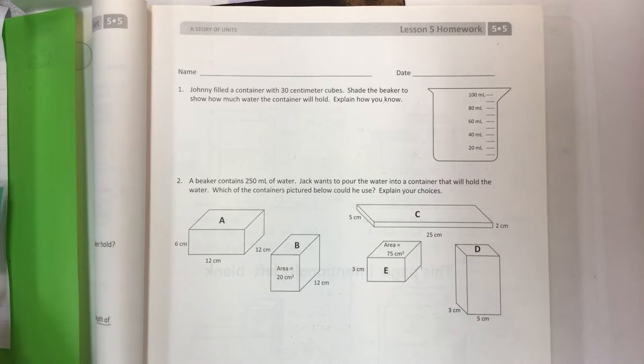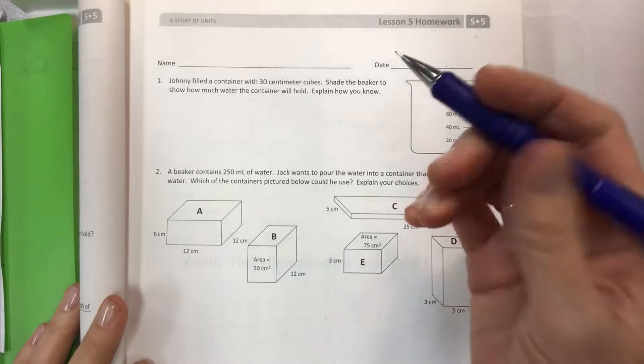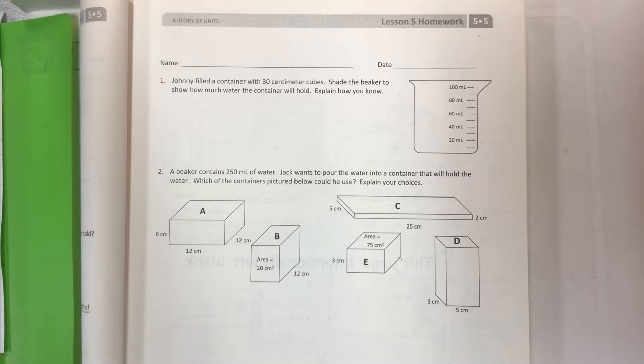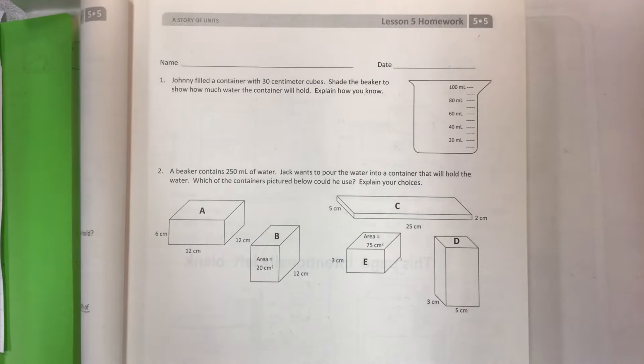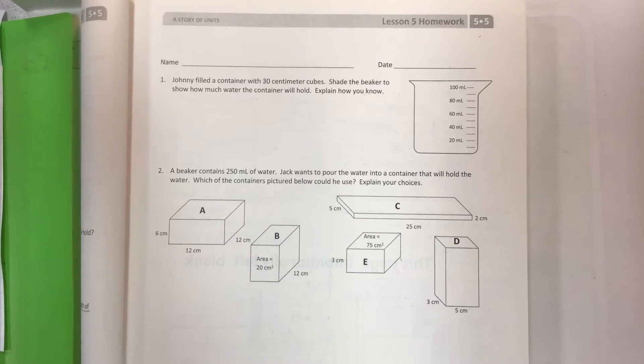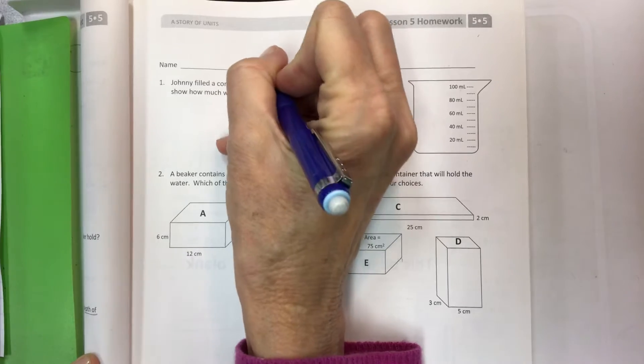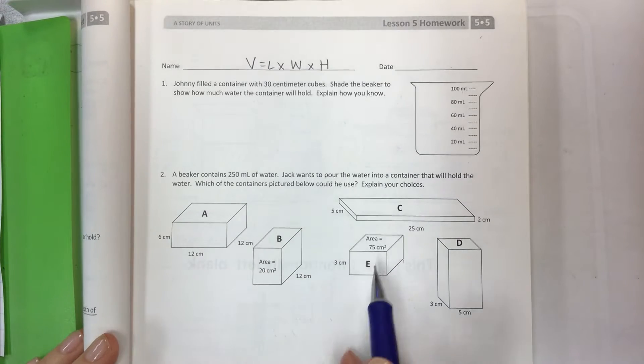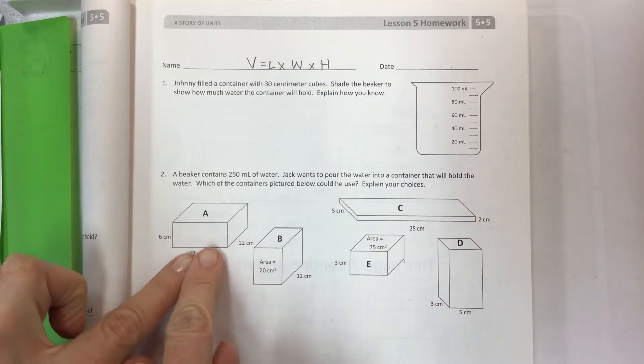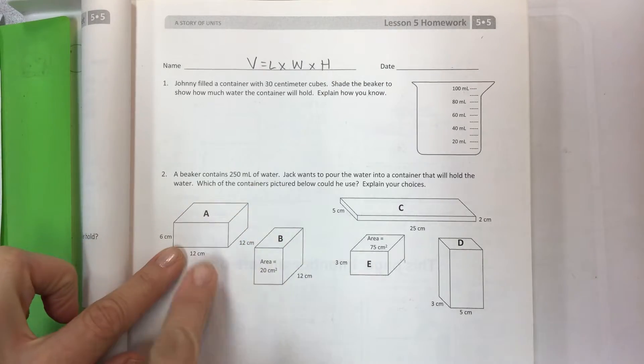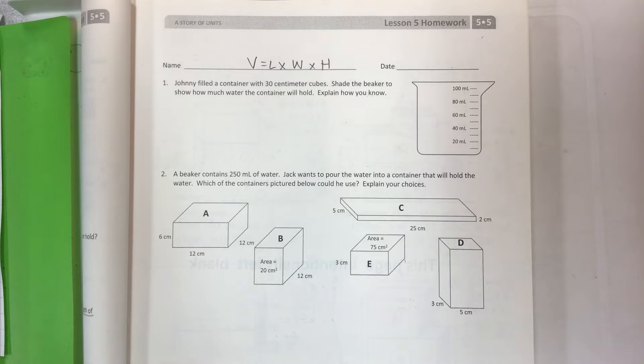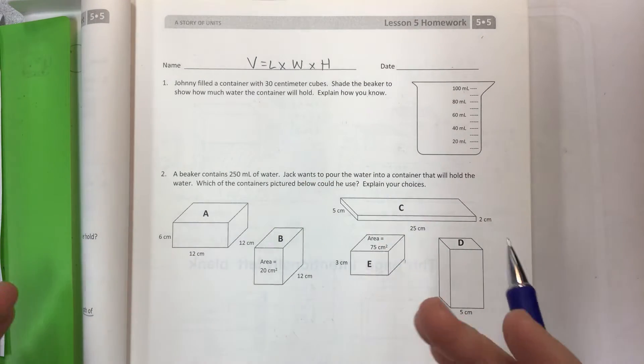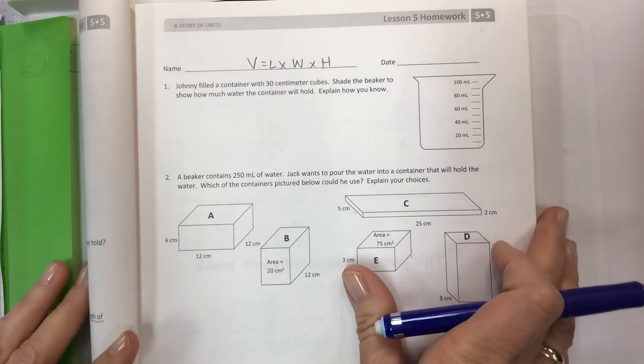We're gonna do this together if you are stuck. The objective is at the bottom of the page as usual - use multiplication to connect volume as packing with volume as filling. Really what we're trying to do here is understand that you can use your length times width times height formula when you have a rectangular prism. These are all rectangular prisms that means it's all filled evenly to complete a whole face as opposed to having little gaps or spaces where it's not filled.